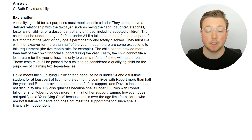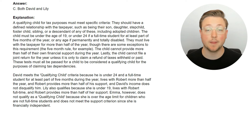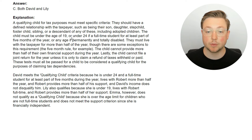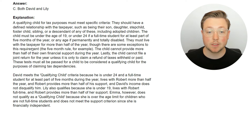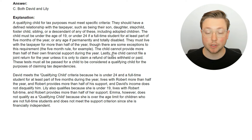The child must be under the age of 19 — that is very specific wording, under the age of 19, which doesn't include 19. So basically all the way through 18 they can be counted as your dependent, but once they turn 19 they won't qualify unless they meet the under-24-if-a-full-time-student requirement. That means under 24 if a full-time student for at least part of five months of the year, or any age if permanently and totally disabled. They must live with the taxpayer for more than half of the year. The child cannot provide more than half of their own financial support during the year.